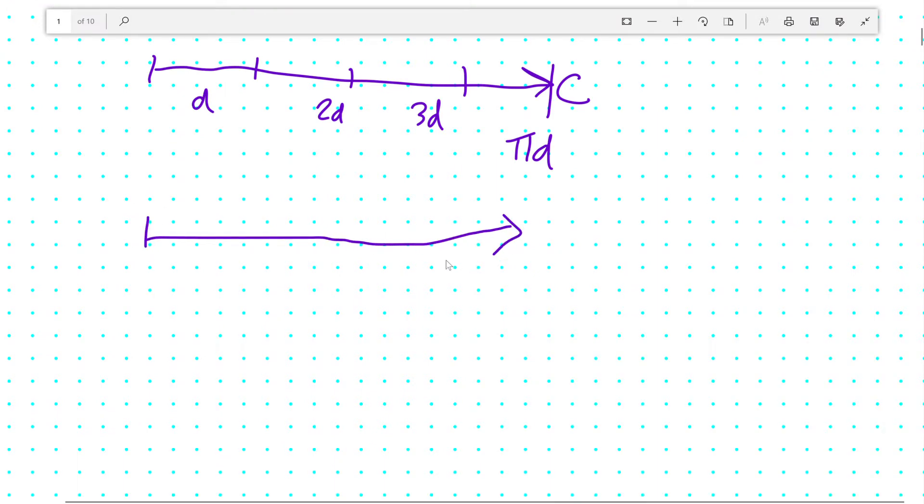and you decided to split it up into lengths the same as the radius, you'd get first radius, the second radius, the third radius, fourth radius, the fifth radius, the sixth radius, and ultimately the two pi-th radius.